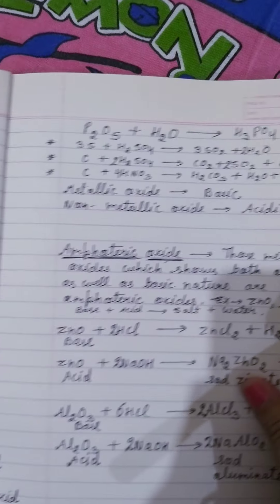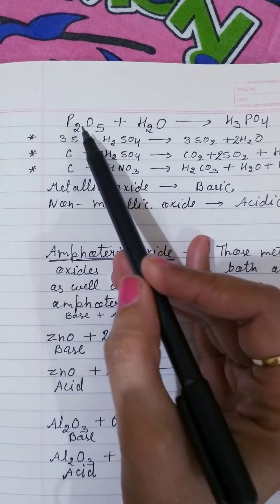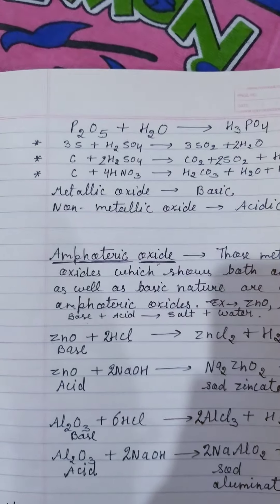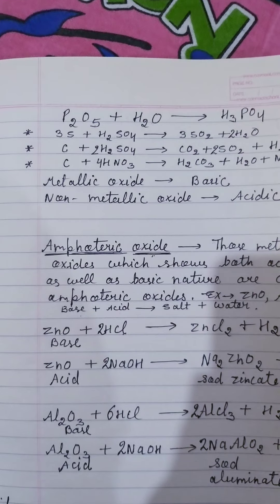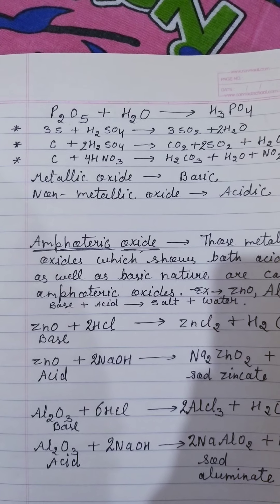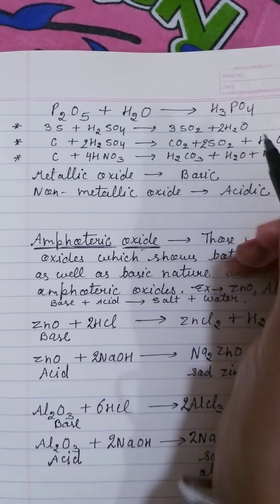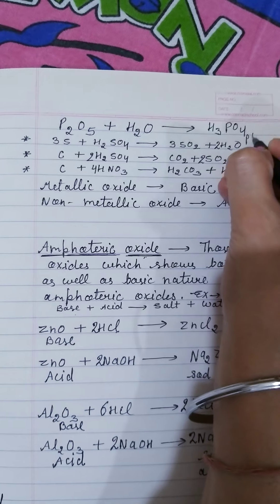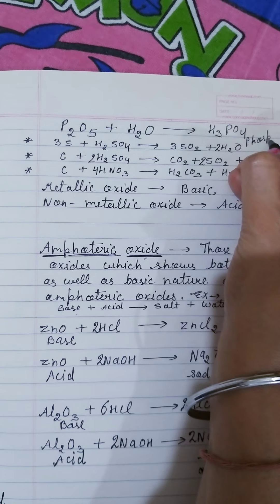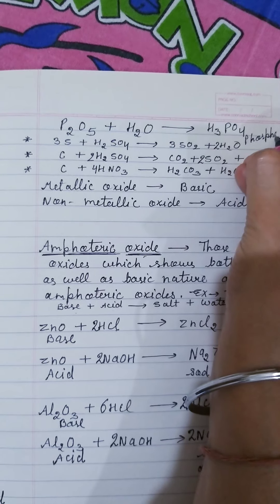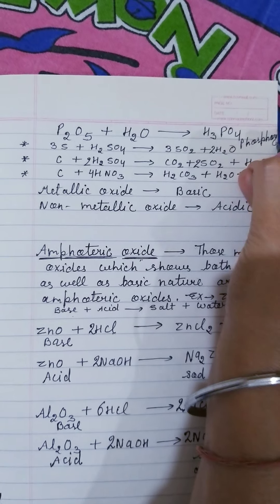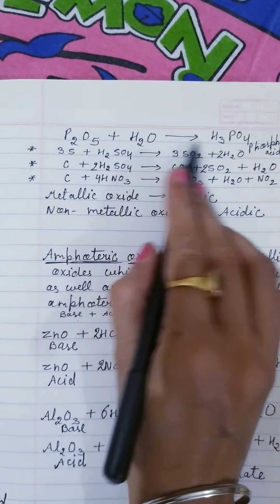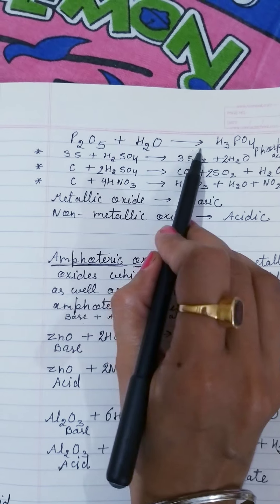One more reaction to understand: when phosphorus reacts with oxygen it forms P₂O₅, which is phosphorus oxide. When P₂O₅ dissolves in water it forms phosphoric acid — H₃PO₄. The balancing of this equation you should try yourself today.